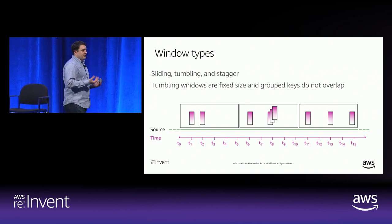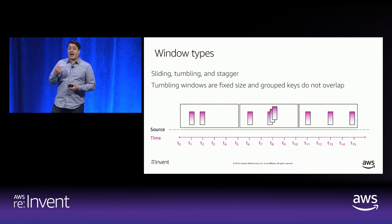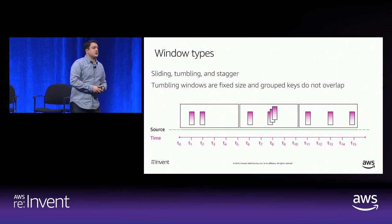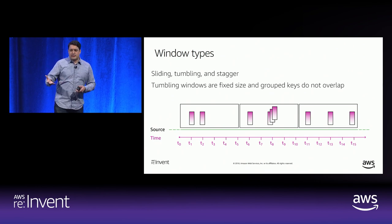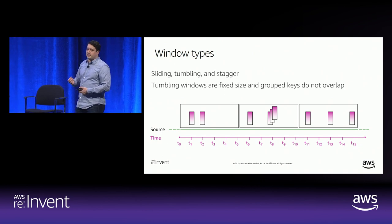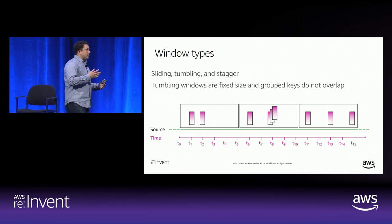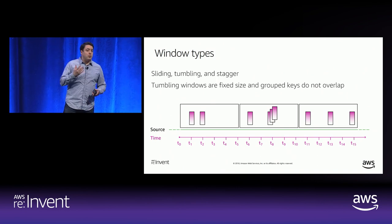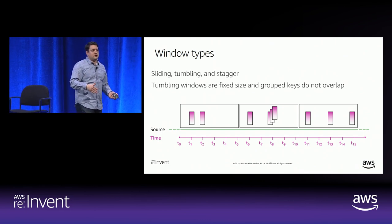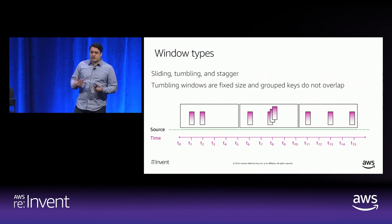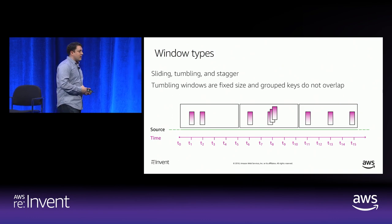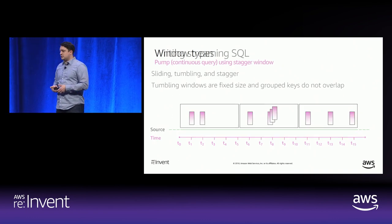Sliding windows are more popular for operational use cases because they produce results for every single event flowing through the stream — a rolling or sliding count. Whereas tumbling windows produce a single result at the end, sliding windows produce an event for every single event processed. A rolling count will look like one, two, three, four, and then perhaps an event drops out of the window and it goes back to three. Sliding windows are typically used for operational monitoring or when customers want to react as fast as possible to the stream. The final type is a stagger window.